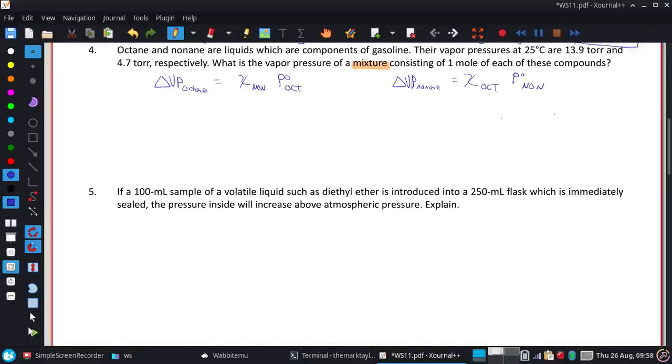All right, fortunately in this one, both of these have the exact same mole fraction. And that's mainly because the mole fraction of nonane says we have one mole of each. So that means you have one mole of nonane over one mole plus one mole. One mole of nonane over one mole of nonane and one mole of octane. So both of these, I'm just going to end up putting one over two for their mole fractions.